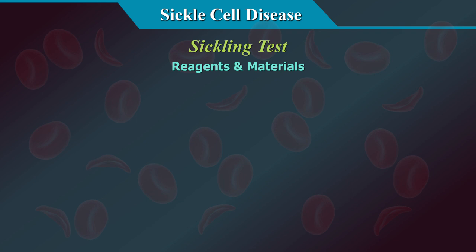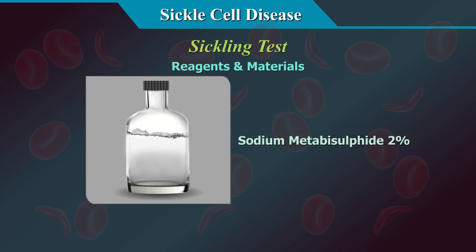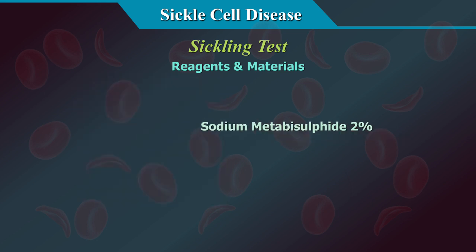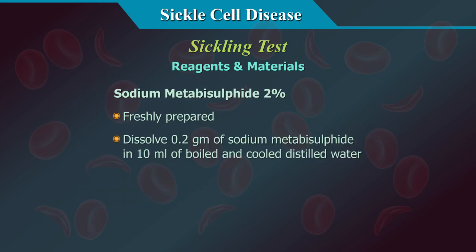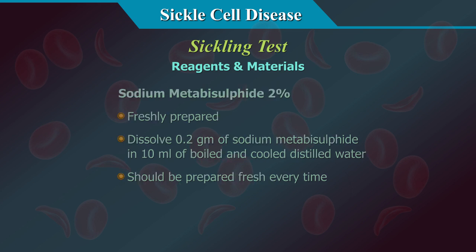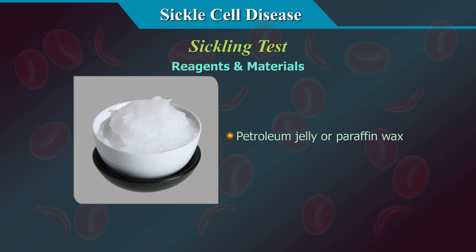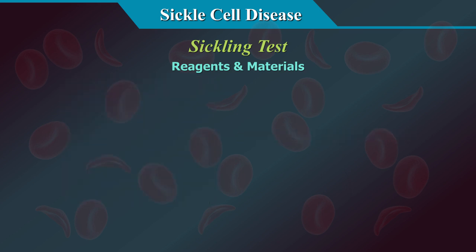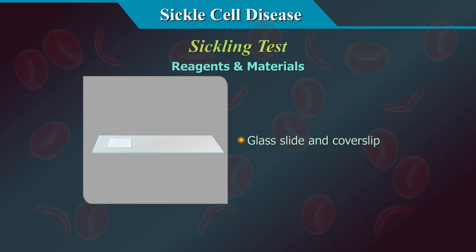Reagents and materials for the sickling test: sodium metabisulphite 2%, freshly prepared by dissolving 0.2 grams in 10 ml of boiled and cooled distilled water — it should be prepared fresh every time. Also required: petroleum jelly or paraffin wax, and glass slides and cover slips.